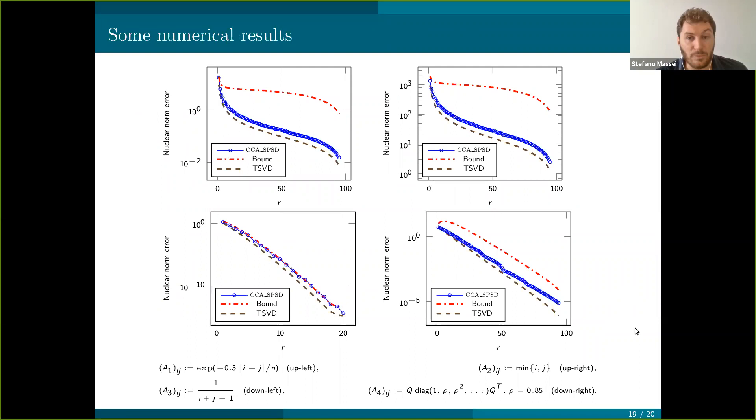This is some numerical test for checking the approximation property of the approximate returned by this method. These four test matrices differ in the decay rate of their singular values. We see that for slowly decaying singular values, the upper bound seems quite pessimistic, but it seems more tight for rapidly decaying singular values. And it seems optimal for the case of the Hilbert metrics.